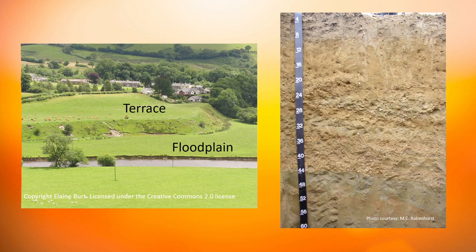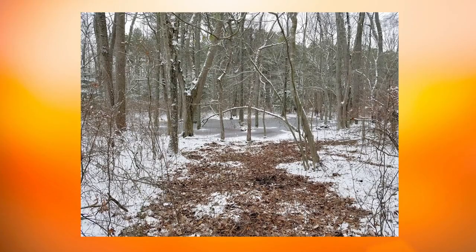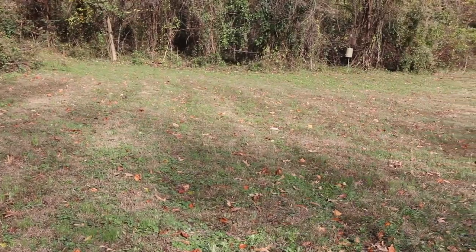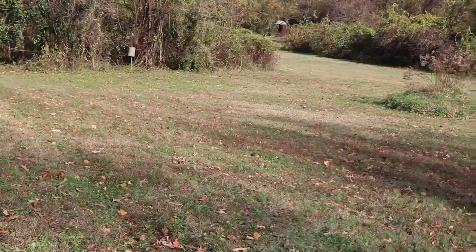Typically these terrace positions would have very well developed profiles with a nice A, nice B, and C. Commonly the soils would have old alluvium type parent material. Other than upland is the upland depression or drainage way — essentially the closed depressions we typically have on the coastal plain, particularly on the eastern shore where water drains toward an area from four different directions and they commonly pond water for short periods of time. In the Piedmont and Appalachian region, we're talking about heads of drainage ways where water comes from three different directions, inducing a wetness issue. For this particular site, we can rule out floodplain, terrace, and upland depression or drainage way. That leaves us with upland.